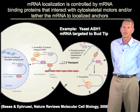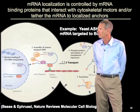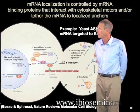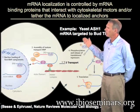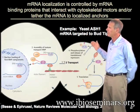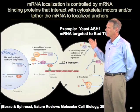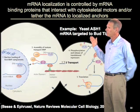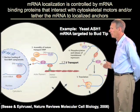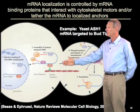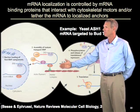An important question then becomes: where does the specificity for localization of mRNAs come from? Using the example of yeast ASH1 mRNA, which is targeted to the bud tip, the basic principle is that the specificity for transporting this RNA to the bud tip is found in RNA-binding proteins, which bind to the RNA and then attach it to cytoskeletal motors.